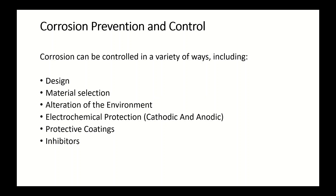You are going to learn about methods to be used to protect the metal. There are several methods that can be used to protect metal from corrosion. In this syllabus, there are six of them: one is through design; second, material selection; third, alteration of the environment; fourth, electrochemical protection, either cathodic or anodic; fifth, protective coatings; and the last one is inhibitors — corrosion inhibitors.